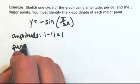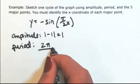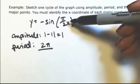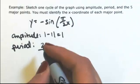The period is found by taking the original period of the function, which is sine, so 2 pi, divided by whatever is in front of x, which is positive, so pi over 2.